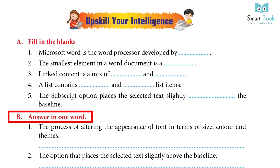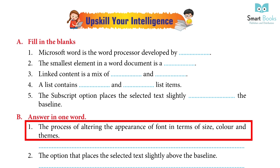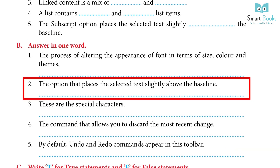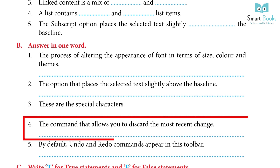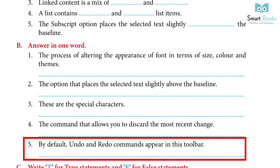Answer in one word: 1. The process of altering the appearance of font in terms of size, color and themes. Answer: MS Word Style. 2. The option that places the selected text slightly above the baseline. Answer: Superscript. 3. These are special characters. Answer: Symbols and shapes. 4. The command that allows you to discard the most recent change. Answer: Ctrl+Z. 5. By default, undo and redo commands appear in this toolbar. Answer: Quick Access Toolbar.